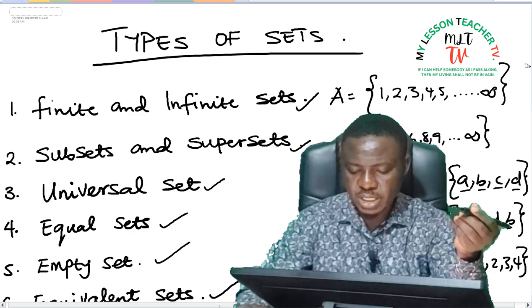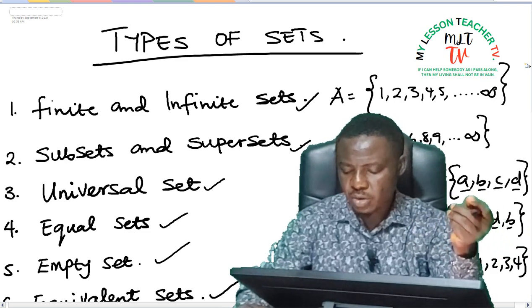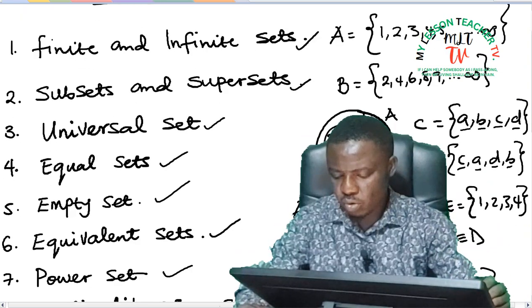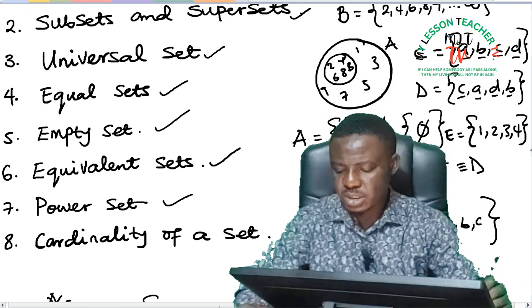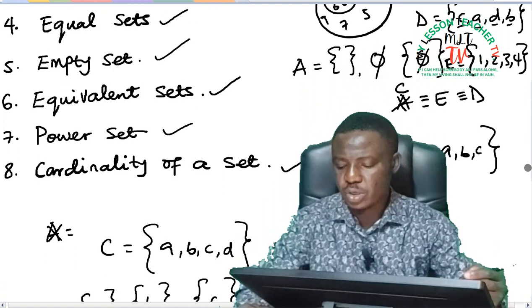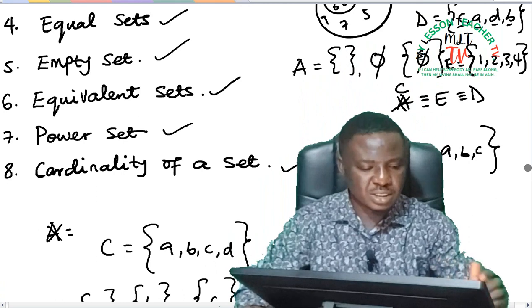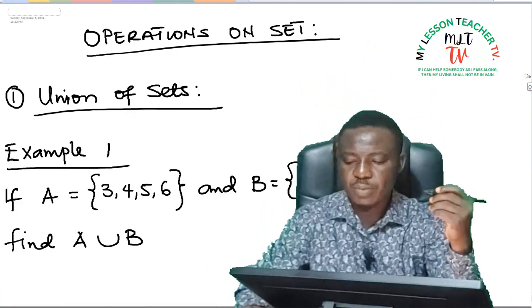We also looked at subsets and supersets, the universal set. We explained all: equal sets, empty set, equivalent sets, and we also touched power set and cardinality of a set.